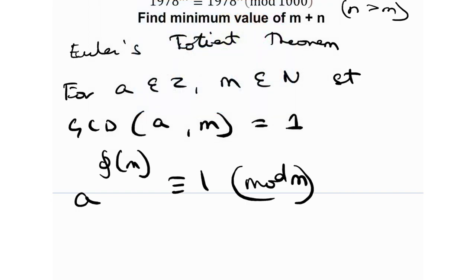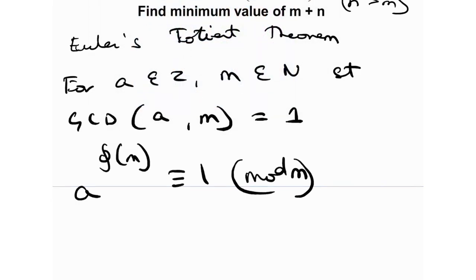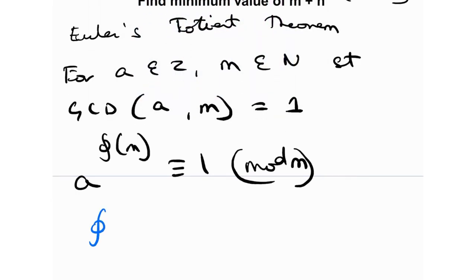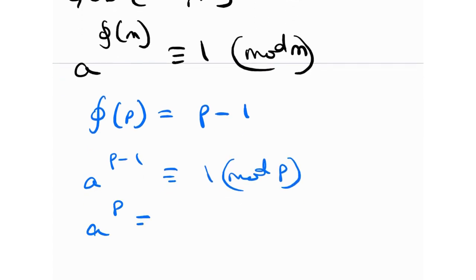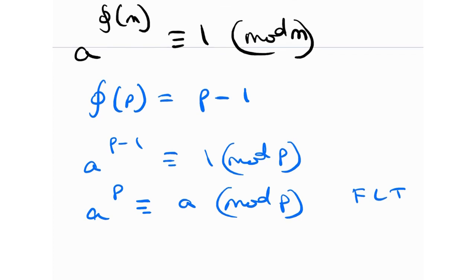Fermat's Little Theorem is a special case of this. For a prime p, phi(p) is p minus 1, so a raised to the power p minus 1 is congruent to 1 modulo p — or equivalently, a raised to the power p is congruent to a modulo p — which is Fermat's Little Theorem (FLT). So FLT is nothing but a special case of Euler's Totient theorem; the Euler–Totient theorem is a generalization of FLT.